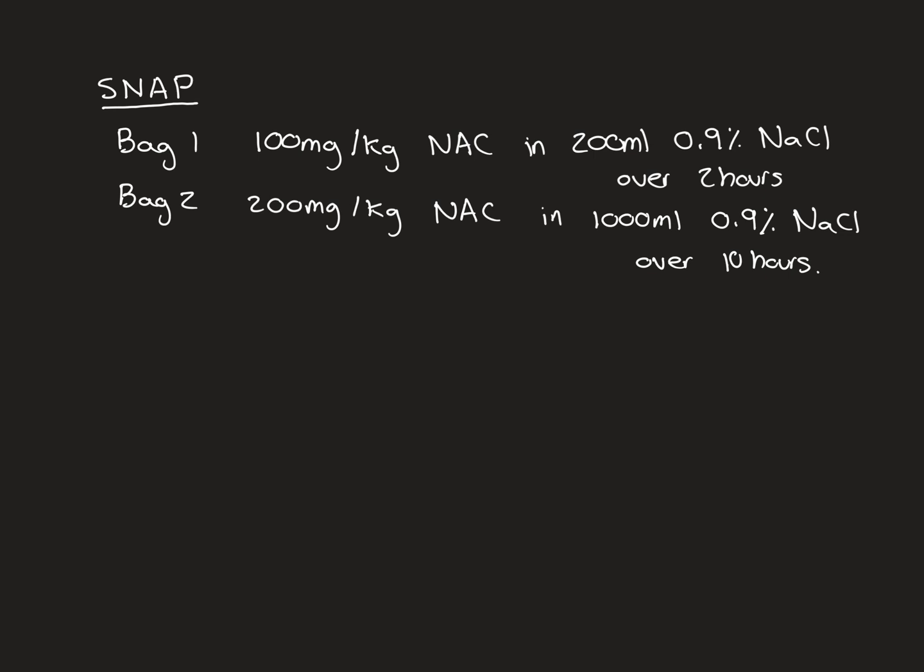After these two infusions of NAC are complete, you then repeat blood tests on the patient. We call these blood tests the post-NAC bloods, and these are going to determine whether the patient is now fit to be discharged or whether they need to have a further infusion of NAC. The three blood tests that we're really interested in, in the post-NAC bloods, are the same three blood tests that we're interested in when we were deciding whether to give NAC in the first place. So we're interested in the paracetamol level, the ALT value, and the INR value.